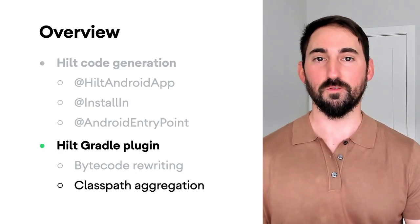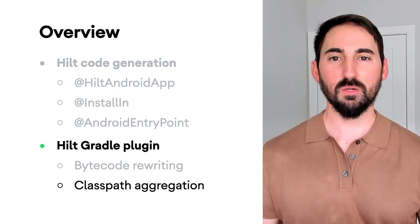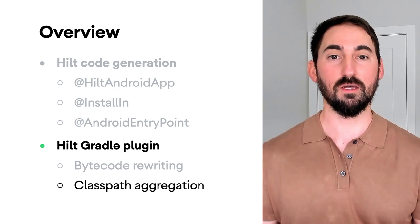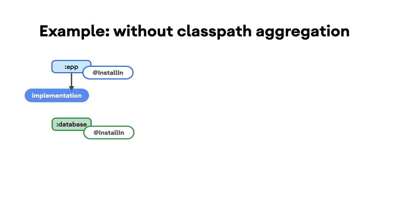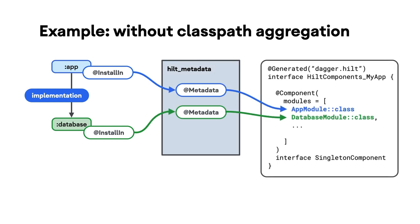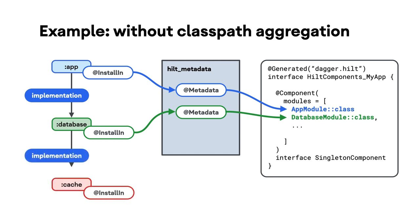Finally, let's look at another useful feature of the Hilt Gradle plugin called classpath aggregation. In this example, app depends on a single Gradle module, database, where both app and database contribute InstallIn modules. Hilt will generate metadata into the fixed Hilt metadata package to find all @InstallIn annotated modules when generating the component. While this works fine for a single level of dependencies, let's see what happens when we add another Gradle module as a dependency of database. We've added the Gradle module cache as a dependency of database and a transitive dependency of app. When cache is compiled, although it will generate metadata, that metadata will not be available when compiling app because it's a transitive dependency. Thus, Hilt has no way of knowing about the cache module and it will be accidentally excluded from the generated component.